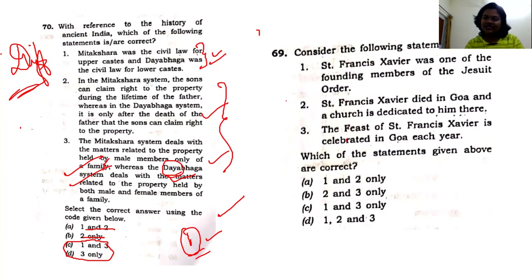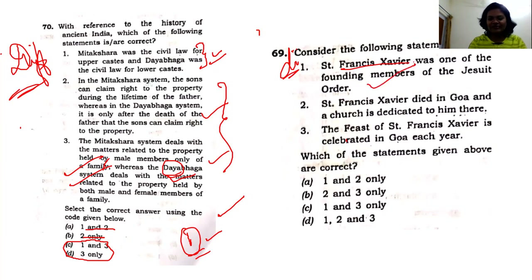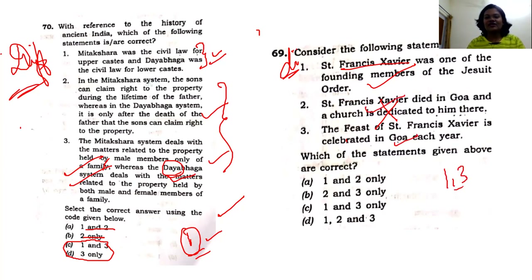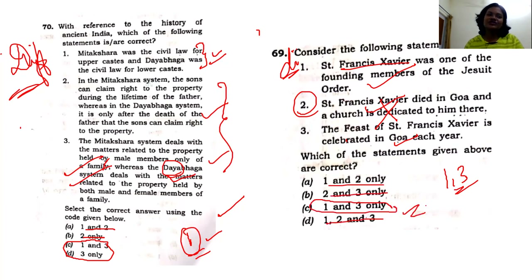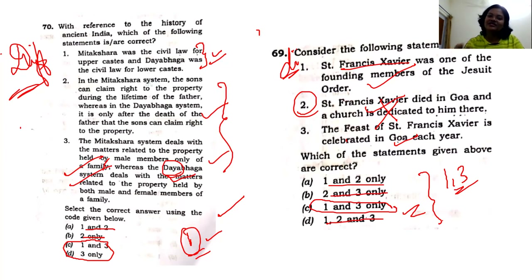The next question about St. Francis Xavier is also at a difficulty level since there are no direct references. St. Francis Xavier came to India with seven members, settled at Goa, and propagated Christianity. He is one of the founding members of the Society of Jesus, but he died in China while on a mission to convert China — not in India. His feast is celebrated in Goa. Knowing he didn't die in India, you can eliminate option two — the answer is options one and three.